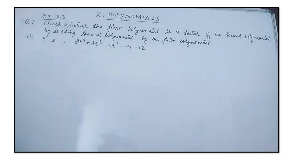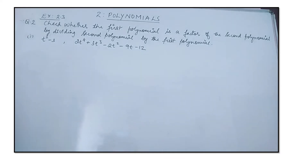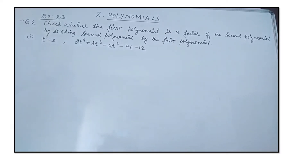Good morning. Today we are considering exercise 2.3 of the chapter Polynomials. Question number 2 is: check whether the first polynomial is a factor of the second polynomial by dividing the second polynomial by the first polynomial.